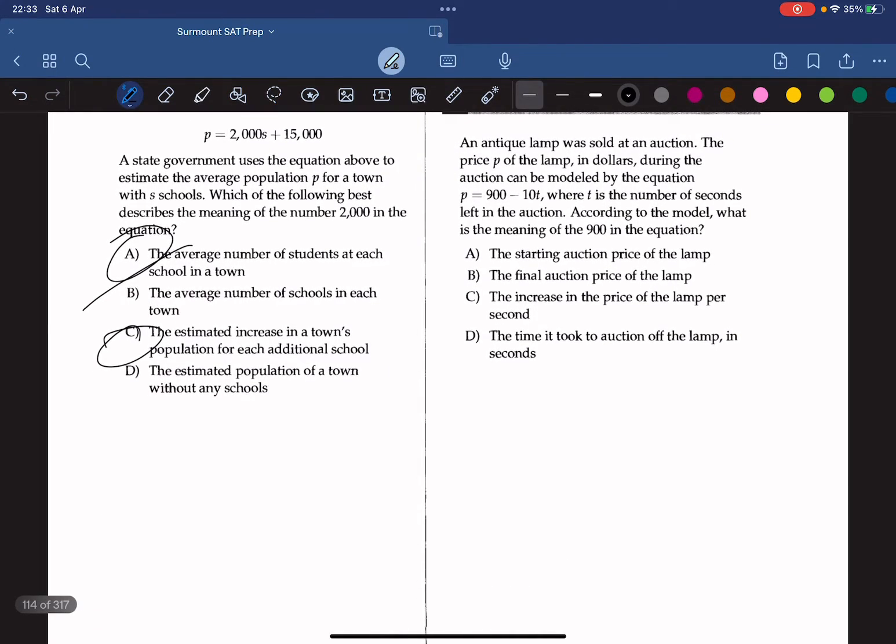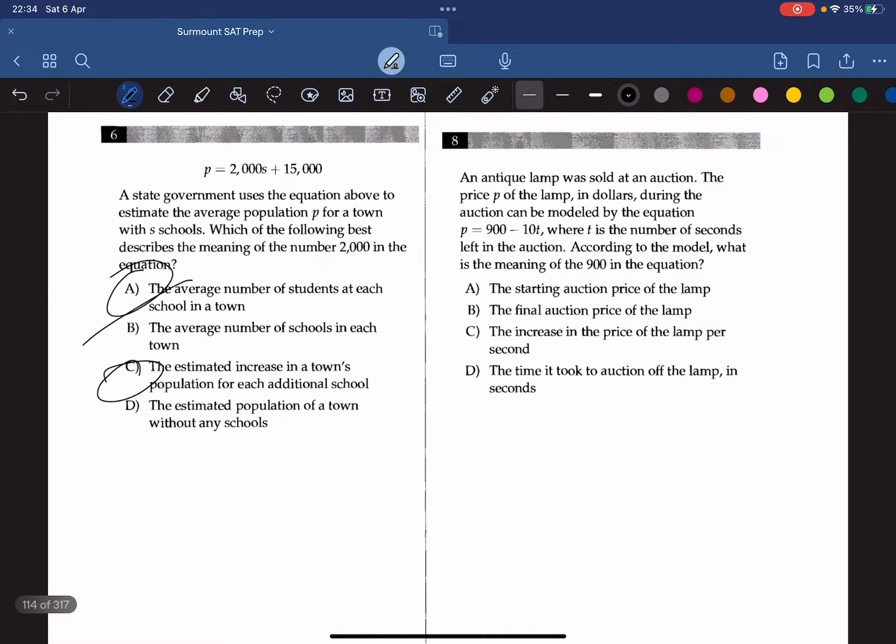An antique lamp was sold at an auction. The price P of the lamp in dollars during the auction can be modeled by the equation P equals 900 minus 10T, where T is the number of seconds left in the auction. According to the model, what is the meaning of the 900 in the equation? When T is zero, this means that there is no time left in the auction, and that the auction is already done. Therefore, the final auction price of the lamp should be 900. So the answer here should be B.